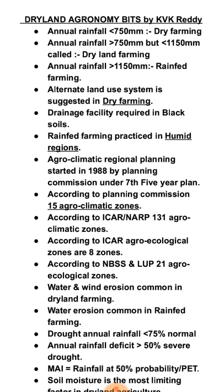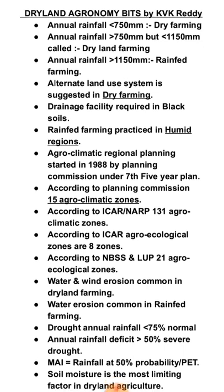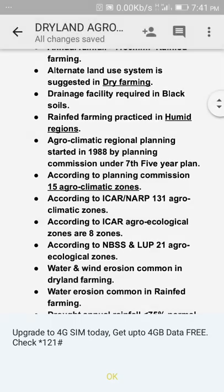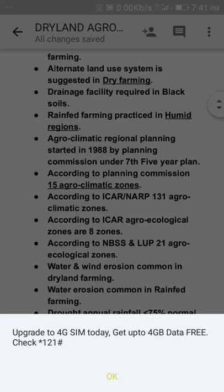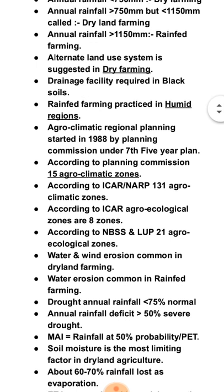In dry farming, alternate land use system is suggested and drainage facility is required in black soils. Rainfed farming is practiced in humid regions. Agroclimatic regional planning started in 1988 by the Planning Commission under the 7th Five Year Plan. According to the Planning Commission, there are 15 agroclimatic zones in India.